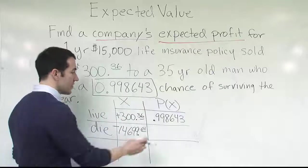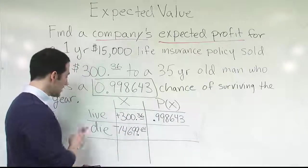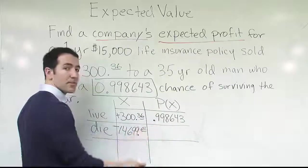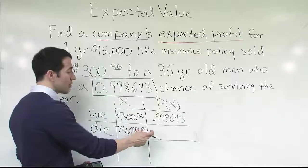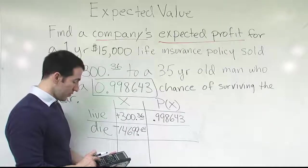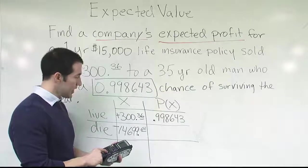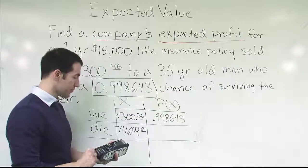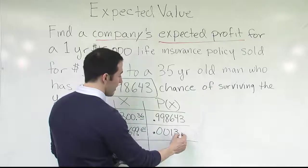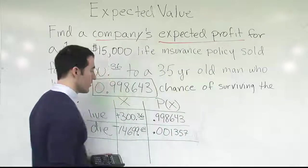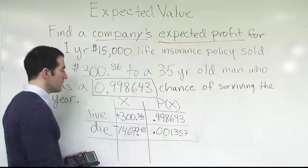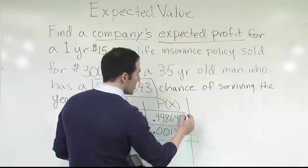Once we have the survival probability, we figure out the chance the person dies. It's an either/or thing — either you live or you die by the end of the year. So this probability plus the death probability must add up to 1. If I take 1 minus 0.998643, I get the probability of dying before the end of the year: 0.001357. That's the probability the person dies; we now have both probabilities in the table. Setting up the table is probably the hardest part — the rest is just mechanical calculations.